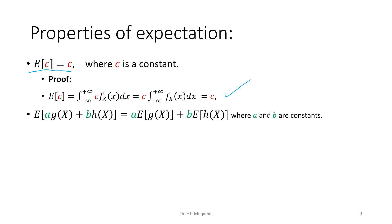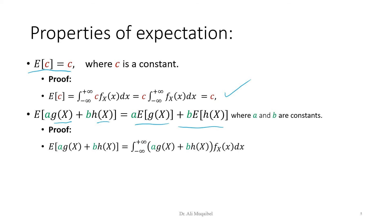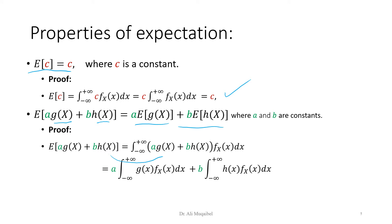The second property: the expectation operation is linear. The expectation of two functions scaled is the individual expectations scaled — E[a·g(x) + b·h(x)] = a·E[g(x)] + b·E[h(x)], where a and b are constants. We can prove this by substituting into the equation, splitting the integration, and factoring out the constants.